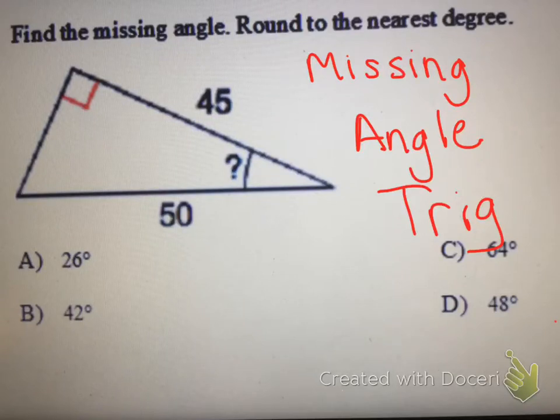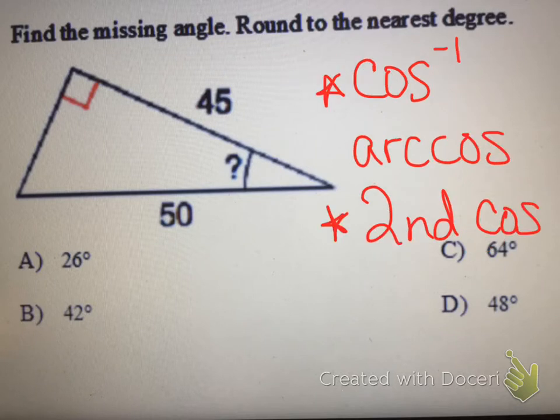In this video, we're going to use trig to find a missing angle. The button that we'll use to find this is the second cosine button, and it'll look like cosine to the negative one on your calculator screen when you see it.